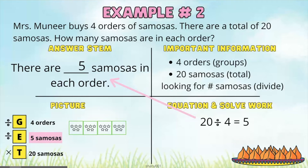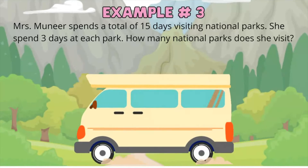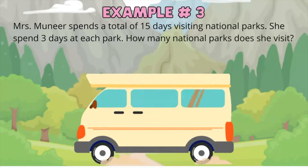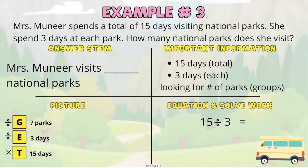Let's try another example. Example number 3. Mrs. Muneer spends a total of 15 days visiting national parks. She spends 3 days at each park. How many national parks does she visit? Let's go ahead and make our problem-solving model. Our answer stem is: Mrs. Muneer visits blank national parks. The important information is: there's a total of 15 days, and it's 3 days at each park. So we are looking for the number of parks, which is the groups.